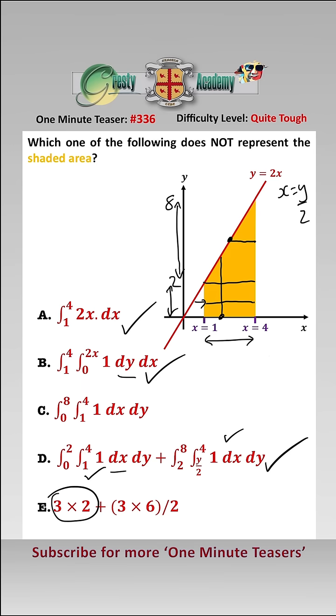E, what we're doing is we're splitting it into this rectangle here, which is 3 by 2, and this is just the area of the triangle, and so that is correct.